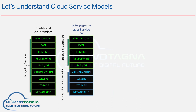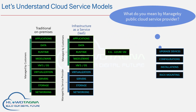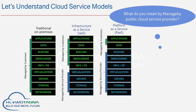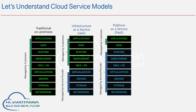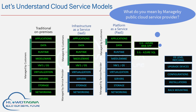In the Infrastructure as a Service model, the data, application, and operating system are fully managed by you, however the lower-level resources are managed by the public cloud service provider. Azure Virtual Machine is a great example of Infrastructure as a Service. In the Platform as a Service model, you will be just managing your applications and data — the underlying operating system and lower-level resources are completely managed by the public cloud service provider. Azure SQL and Azure Web App are examples of the Platform as a Service model.